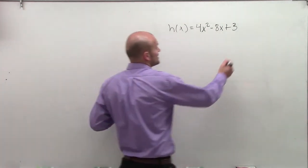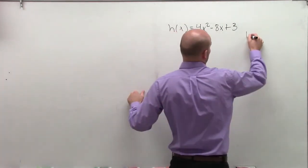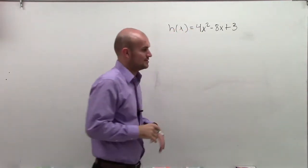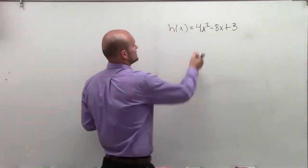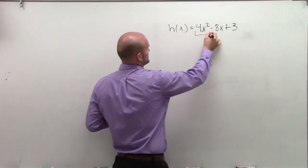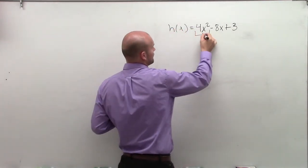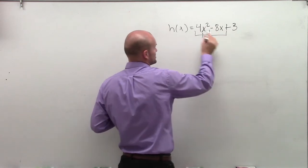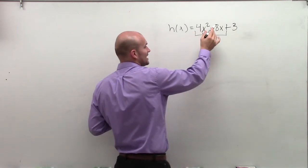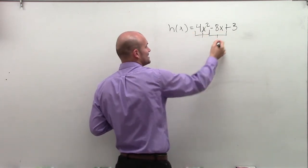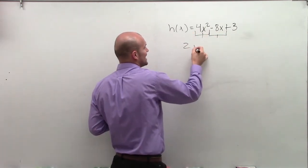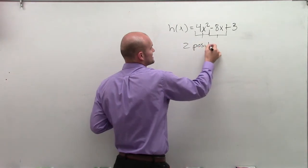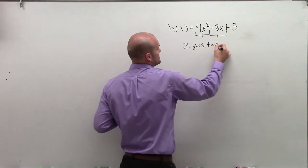And then I do the same thing for h of negative x for my negative real zeros. To find the positive real zeros, I notice that I have one change and another change — I go from positive to negative, then negative to a positive — meaning I have two positive zeros.